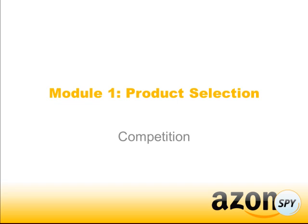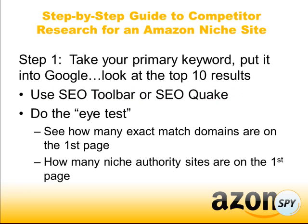So now we're going to analyze the competition to see if it's a niche that we can get some good rankings and start to make some sales. The first thing I'm going to do is take the primary keyword that I want to rank for, put it into Google, and look at the top ten results — just like what we did in the keyword research video. We do kind of the eye test: we want to see how many exact match domains there are on the first page, how many niche authority sites there are. We noticed with the Canon 1000D that there really weren't that many competitors — there were a few Amazon links and something like a Flickr page.